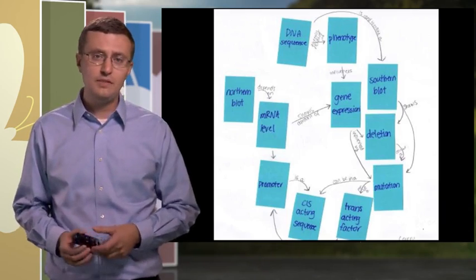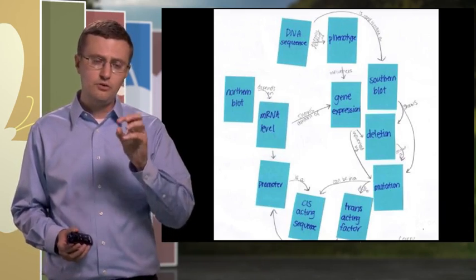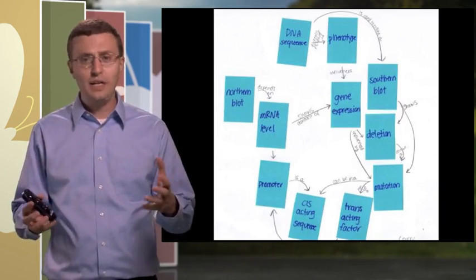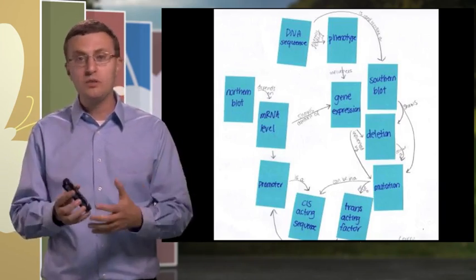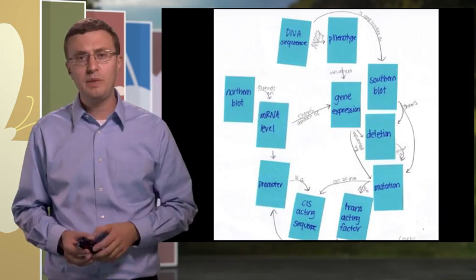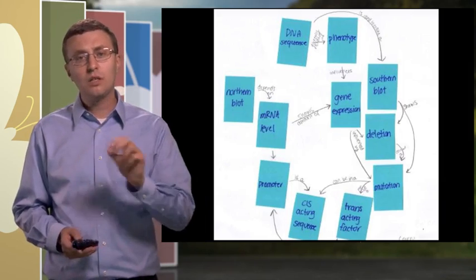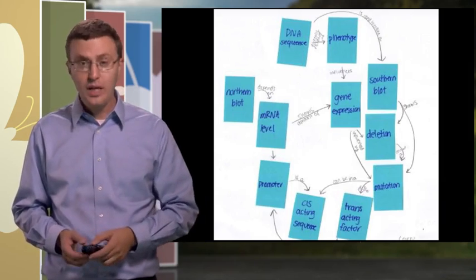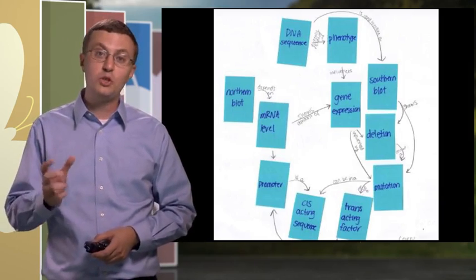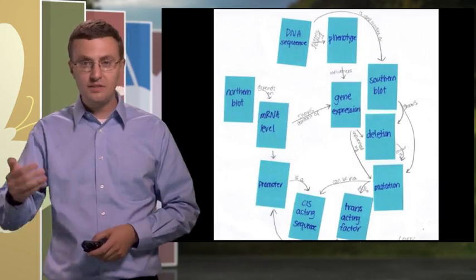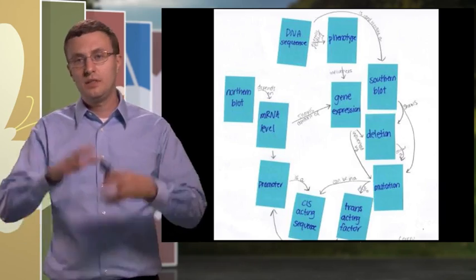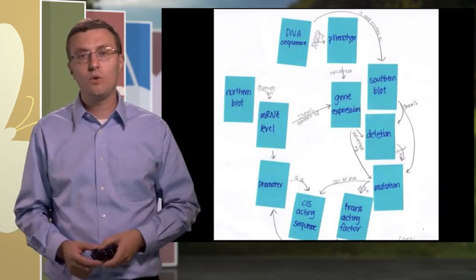The idea with a concept map is that students identify certain key concepts in a certain domain — it could be a whole course, a unit, or a module — and put them on the main page. Then they draw lines between those concepts and label the lines with the relationship between those concepts, such as 'this can be used to do that' or 'this is a super category of this other thing.'